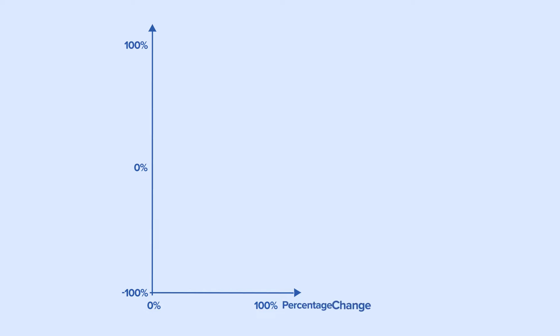Their contrasting positions can be graphically illustrated with the percentage change in population on the horizontal axis, scaled from 0 to 100%, and the percentage change in personal resource abundance on the vertical axis, scaled from minus 100% to plus 100%, with 0% in the center.